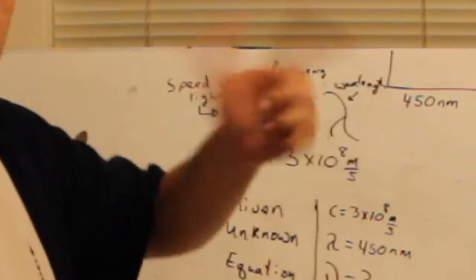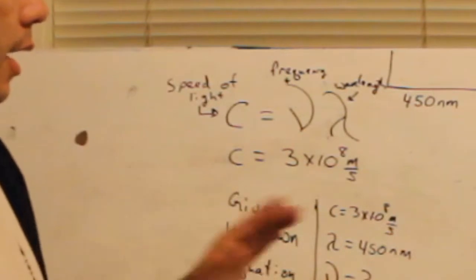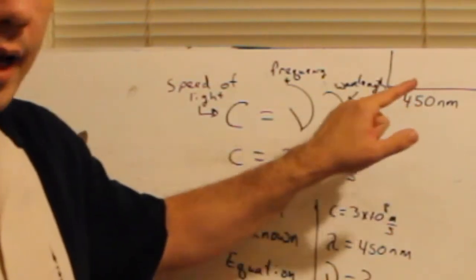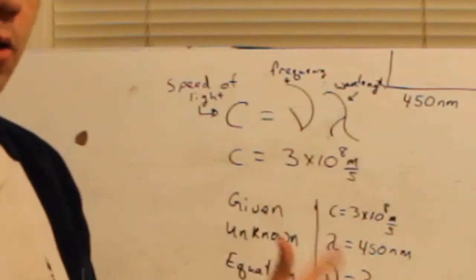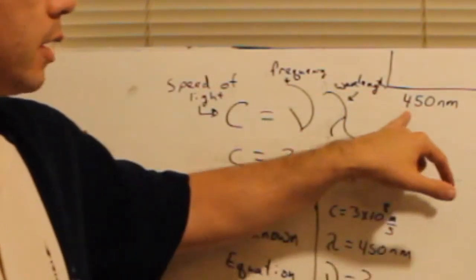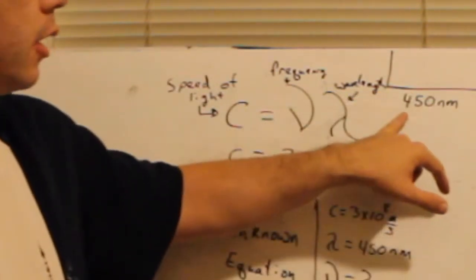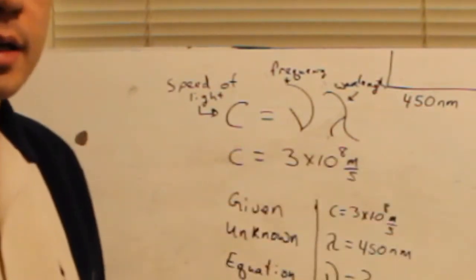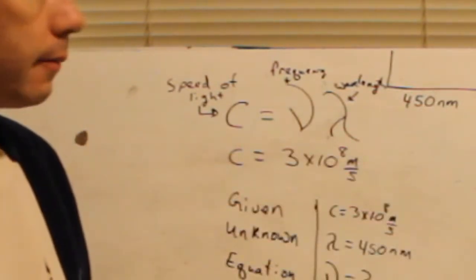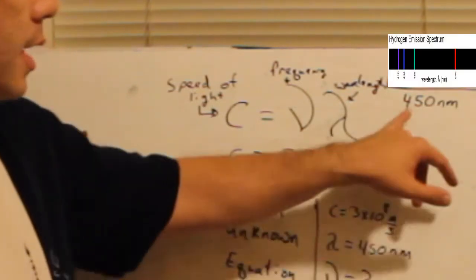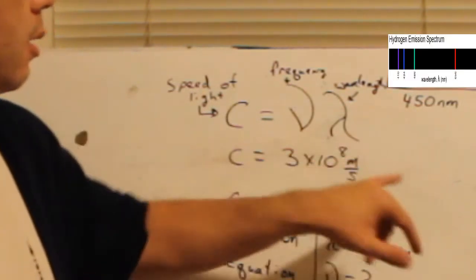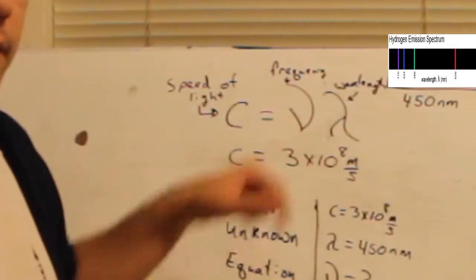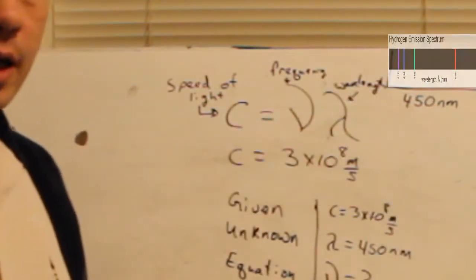Now, when we talked about light, we saw the atom was giving us specific lines of light instead of an entire rainbow. Let's say we take the first color that we see, and we get 450 nanometers for a wavelength. We're going to take this measurement, plug it into this equation, and find frequency.